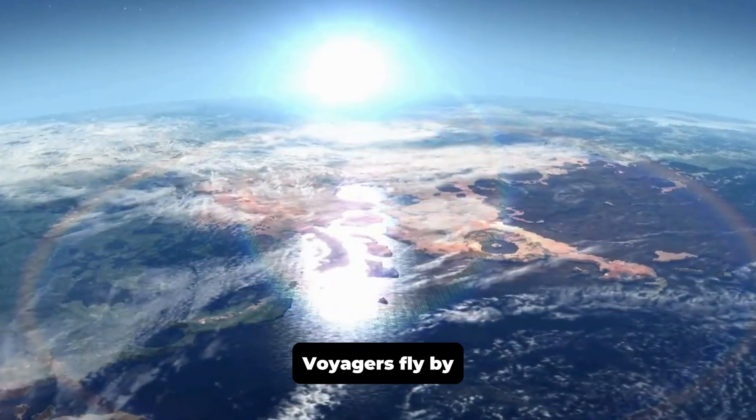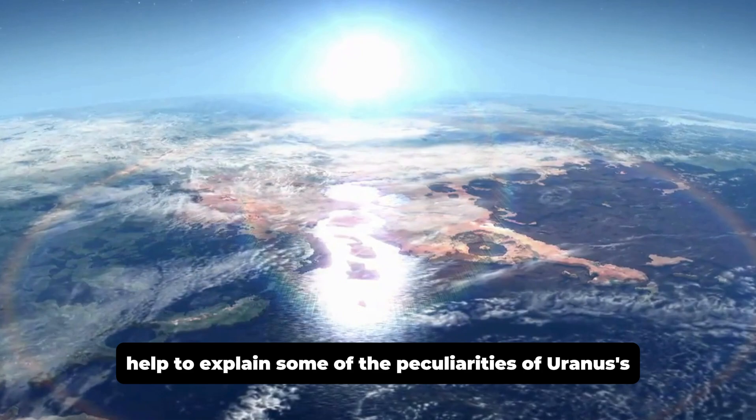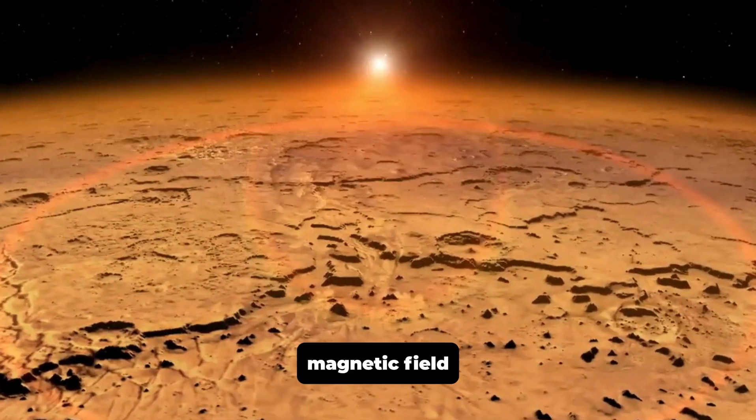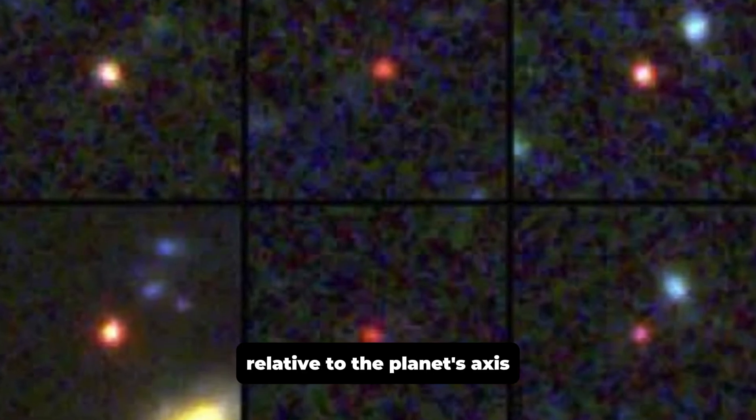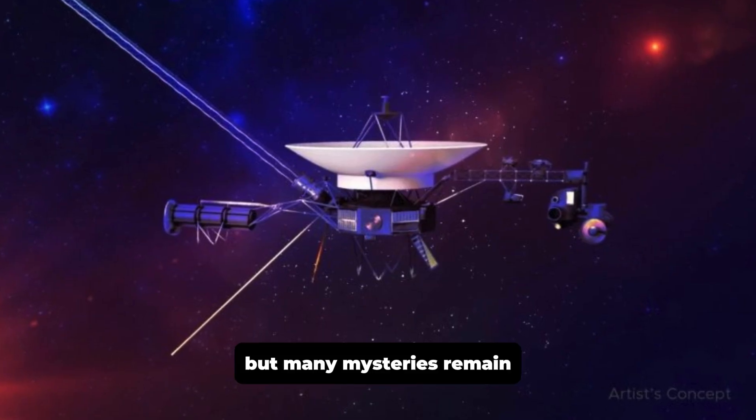Voyager's flyby helped to explain some of the peculiarities of Uranus's magnetic field, which also appeared to be significantly tilted relative to the planet's axis, but many mysteries remain.